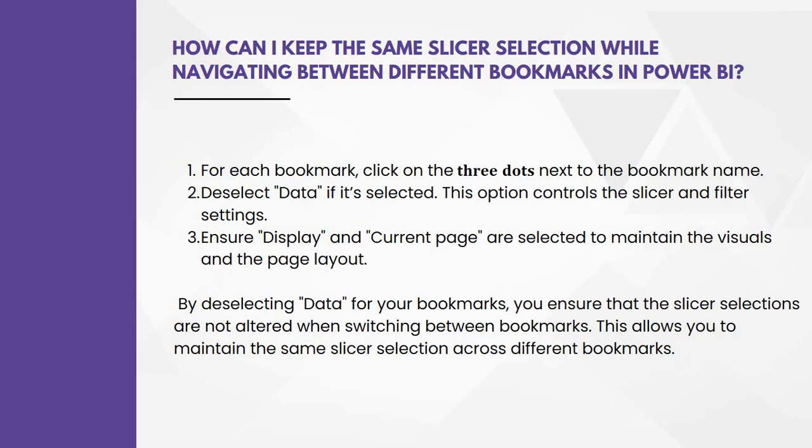The last question: how can I keep the same slicer selection while navigating between different bookmarks in Power BI? For each bookmark, click on the three dots next to the bookmark name and deselect 'Data' if it is selected. This option controls the slicer and filter settings. Ensure 'Display' and 'Current Page' are selected to maintain the visual and page layout. By deselecting 'Data' for your bookmark, you ensure that the slicer selections are not altered when switching between bookmarks, allowing you to maintain the same slicer selection across different bookmarks.